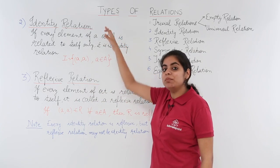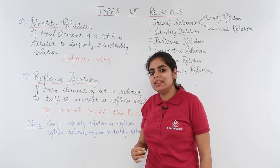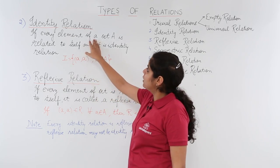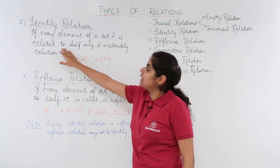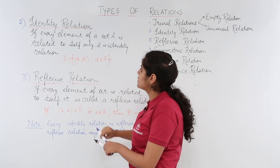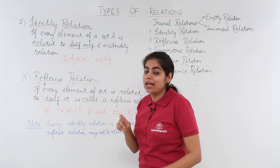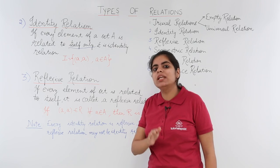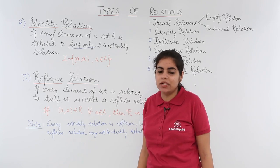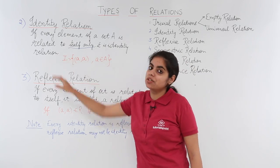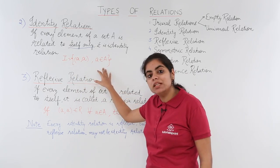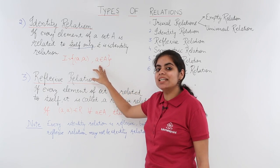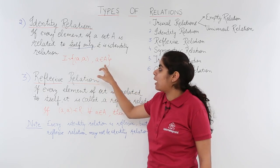Identity relation. Let me read out the definition once for you and then we discuss it in detail with the help of one example. If every element of a set A is related to itself only — these two words are very important: 'itself only' — it is called the identity relation. The mathematical representation is I = {(a, a) : a belongs to A}, where capital A is the set.